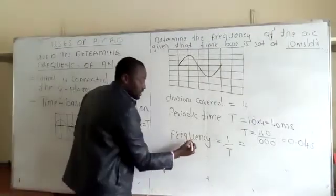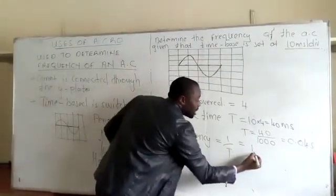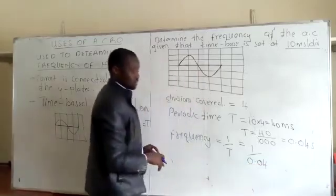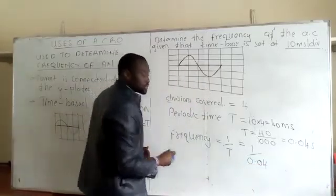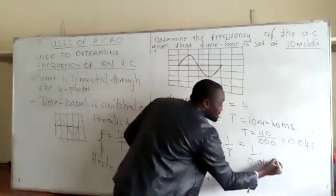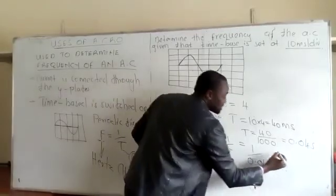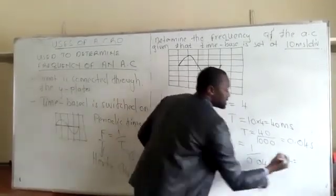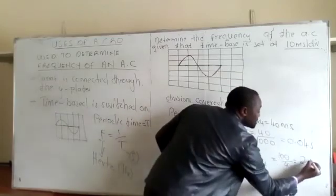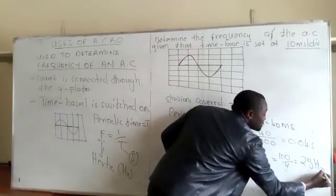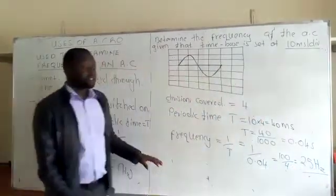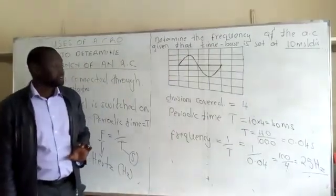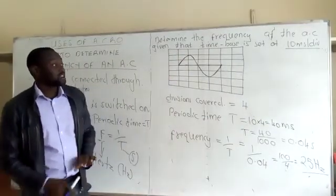Then our frequency will be 1 over 0.04, which is 100 over 4, giving us 25 Hertz. Therefore the frequency of this AC signal is 25 Hertz.